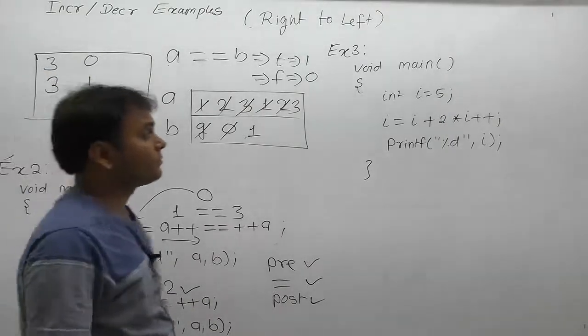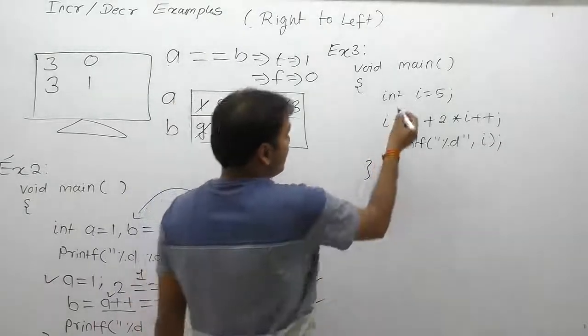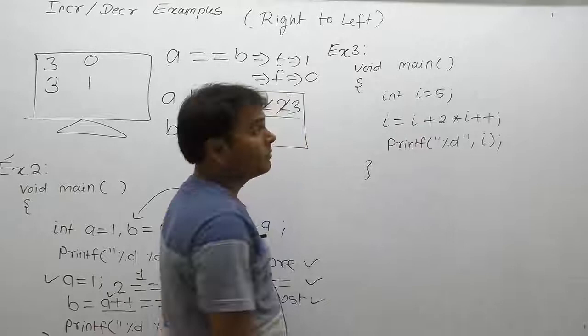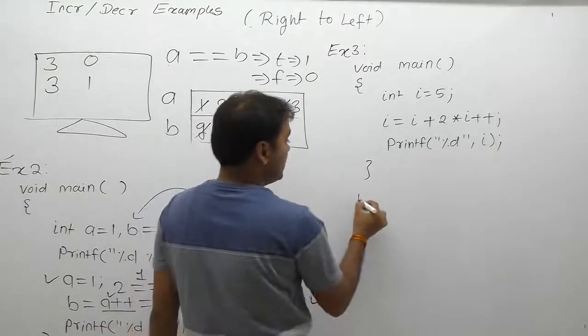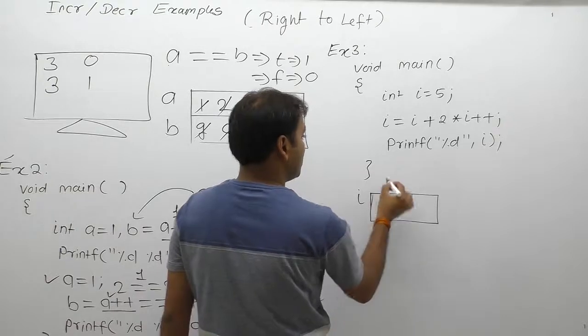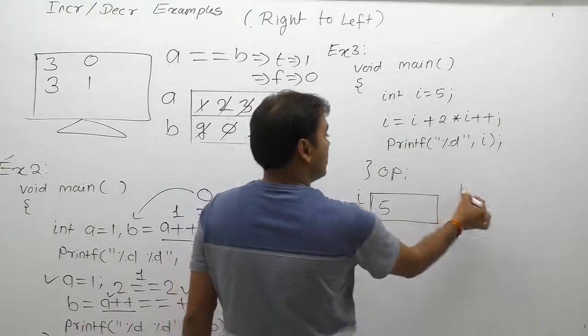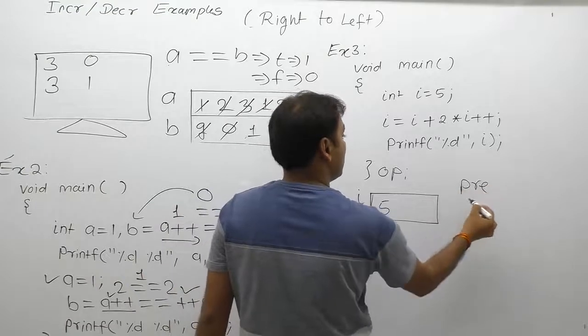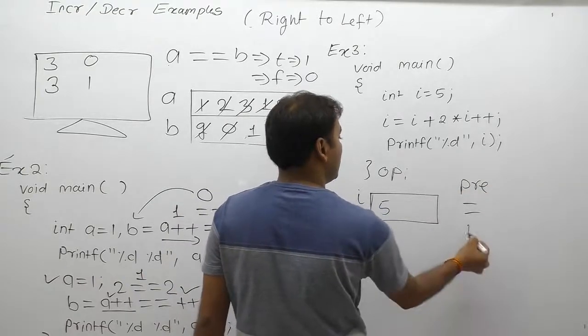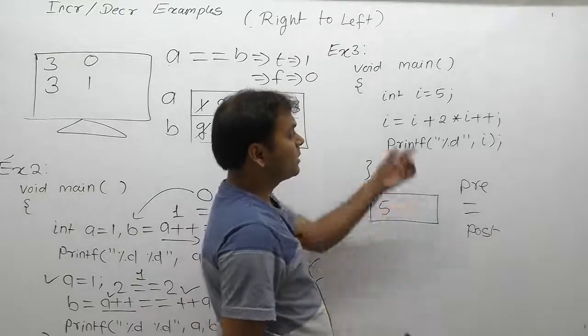Next example regarding assignment operations. In that case, some variable we are declaring, variable i, initial value of i is five. So in this section, we are solving by following assignment tool: pre, assignment, and post. According to this, there is no pre-operation.